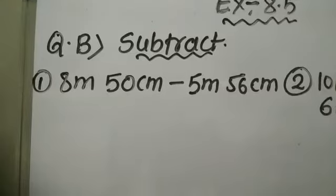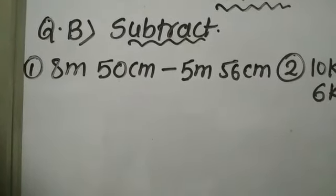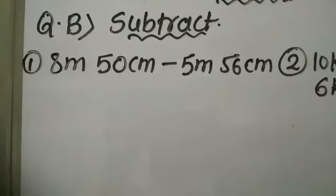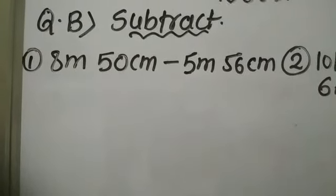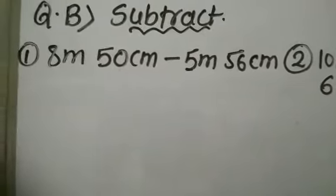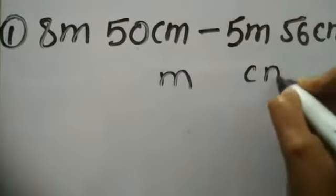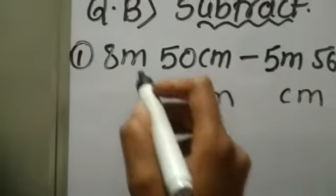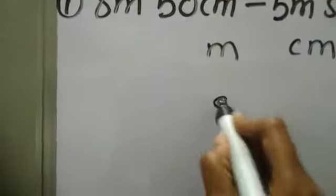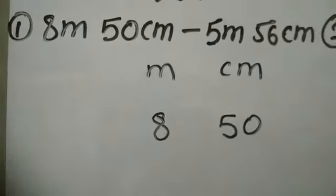What is given? 8 meter 50 centimeter minus 5 meter 56 centimeter. Now the units used are meter and centimeter. Hence to subtract, first we make two columns. The first column is of meter and the second column is of centimeter. So 8 I am writing in the first column and 50 I am writing in the second column.